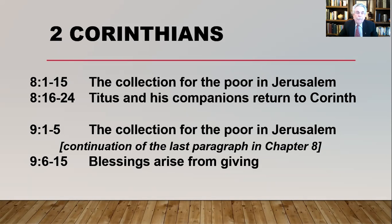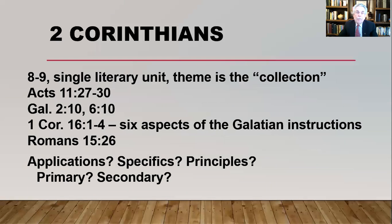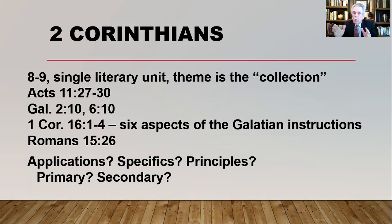The last paragraph deals with chapter 9, verses 6 through 15. Chapters 8 and 9 are a single literary unit that focuses on the activity of the Gentile churches helping with the poor. The theme is a specific collection for the poor in Jerusalem and the surrounding area, and Paul and those traveling with him are going to be responsible for delivering that collection to those churches.